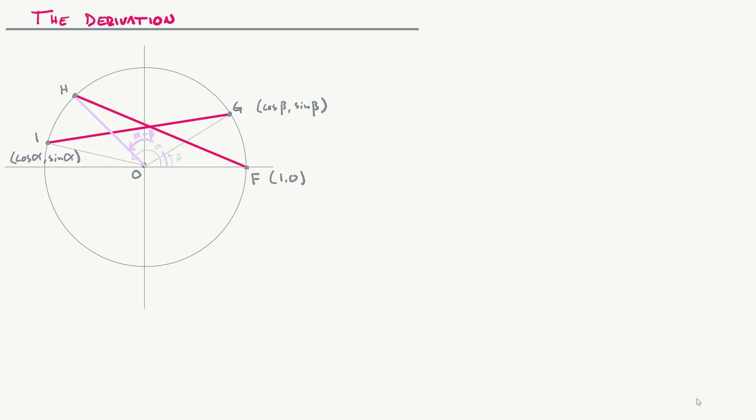We had cosine alpha, sine alpha, cosine beta, sine beta as coordinates. F is now the point (1, 0) because we're on the unit circle. We also need to know what H is. H is still an angle on the unit circle formed by alpha minus beta, so its x-coordinate is cosine of alpha minus beta and its y-coordinate is sine of alpha minus beta. Because triangles OIG and OHF are congruent — all we did was rotate — the lengths IG and HF are exactly the same.